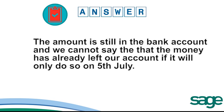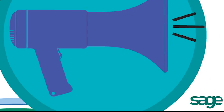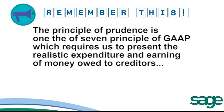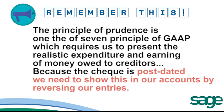The reason for this process is that the amount is still in the bank account and we cannot say that the money has already left our account if it will only do so on the 5th of July. This is a case where the rule of prudence applies. This rule requires us to present the most realistic expenditure and earning of money in the bank and the amount owed to creditors. Because the check is post-dated, it has not left the bank and has not been paid to the creditors. We need to show this in our accounts by reversing our entries.